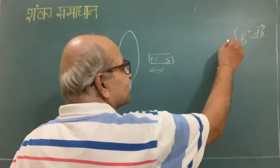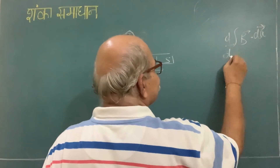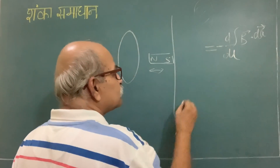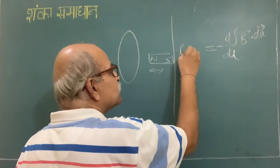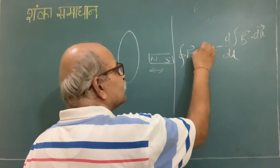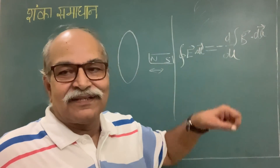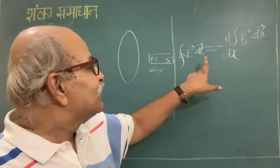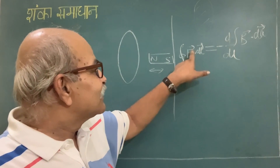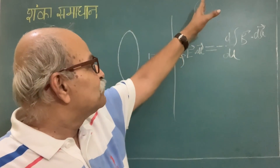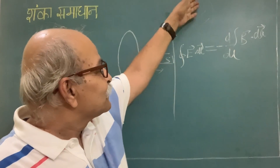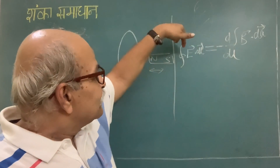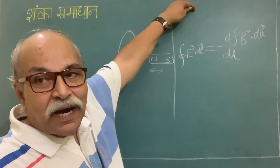The d/dt of that flux with a negative sign is equal to the integral of E·dL. This is the central equation and it has to be understood very well. This electric field is the field being created by the changing magnetic field, and it is at the site of this closed path that we have chosen.